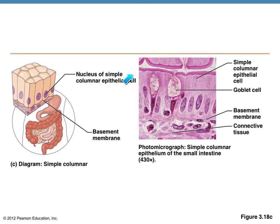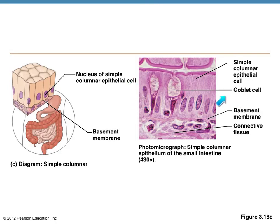Here's a picture of epithelium lining the digestive tract. You can see the basement membrane right here, and you can see that these cells are definitely taller than they are wide. The free surface is the bright space up here. These special cells called goblet cells produce and secrete mucus right to the surface of that tissue layer.